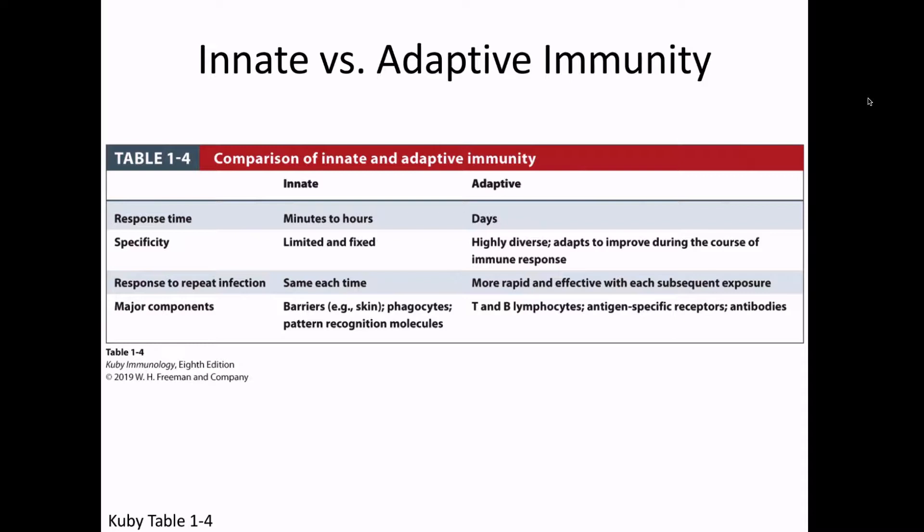The innate and adaptive immune responses have hallmark features that define them as being different from one another. With the innate immune system, the response happens really quickly — in minutes to hours — while the adaptive immune response takes days. This ties into the fact that microbes have a very fast replication rate. If we only had a response that kicked in within days, the microbes could always win, so the innate response is really important because of its speed.